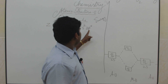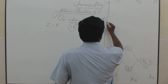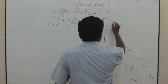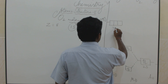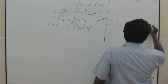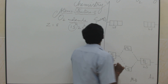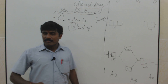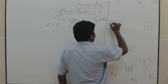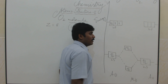Next, electrons enter the 2p orbitals. The 2p level splits into 3 types: x, y, z. Similarly the other atom's 2p splits into x, y, z. Here we have 4 electrons to fill — 1, 2, 3, 4.